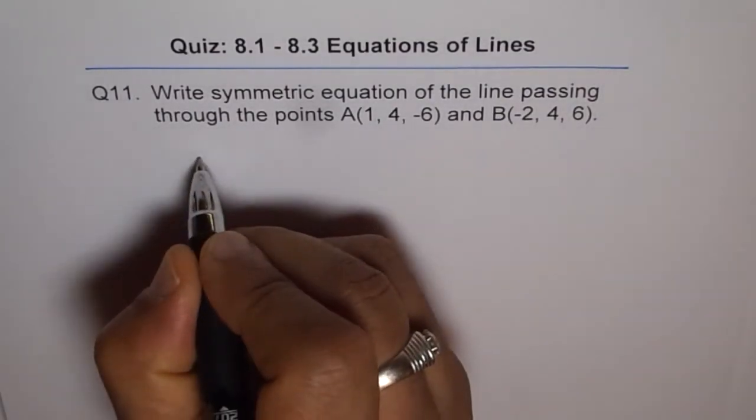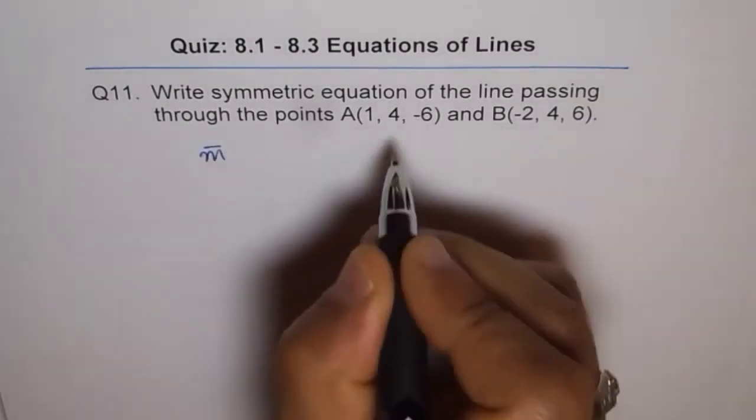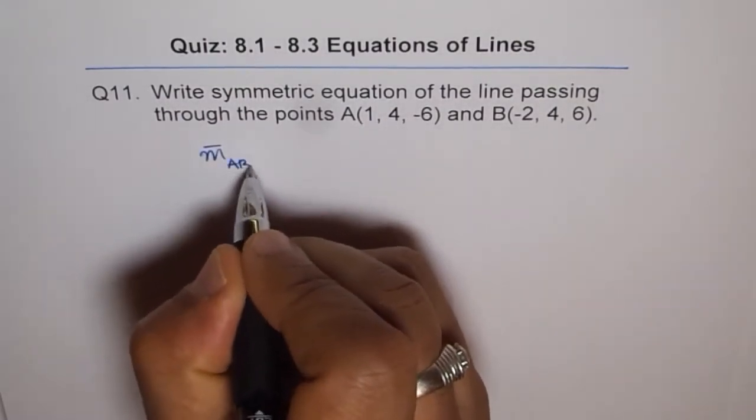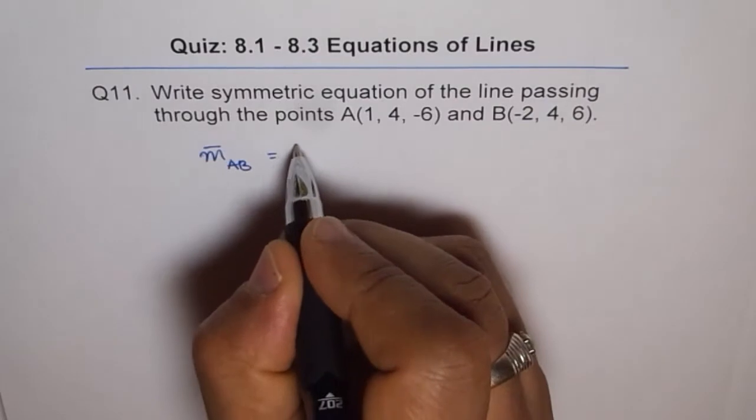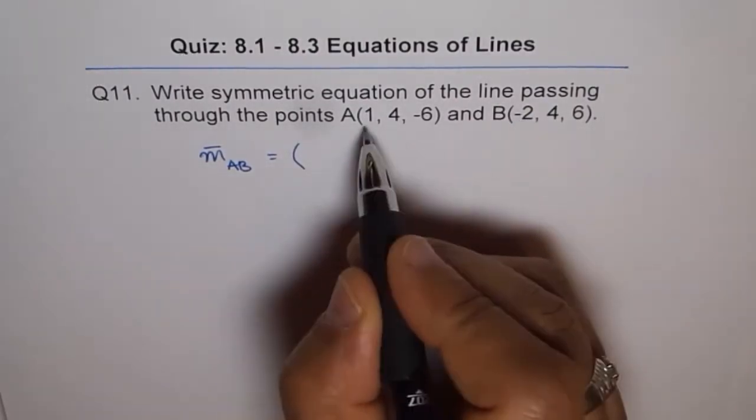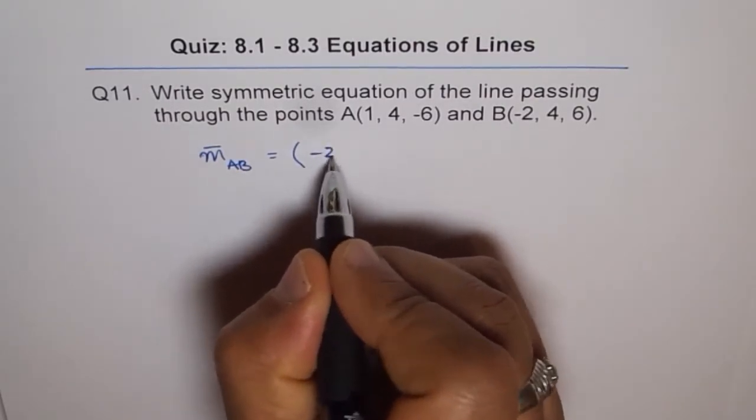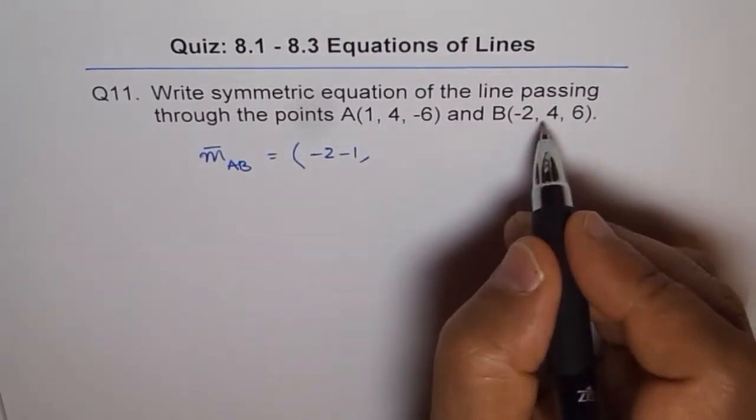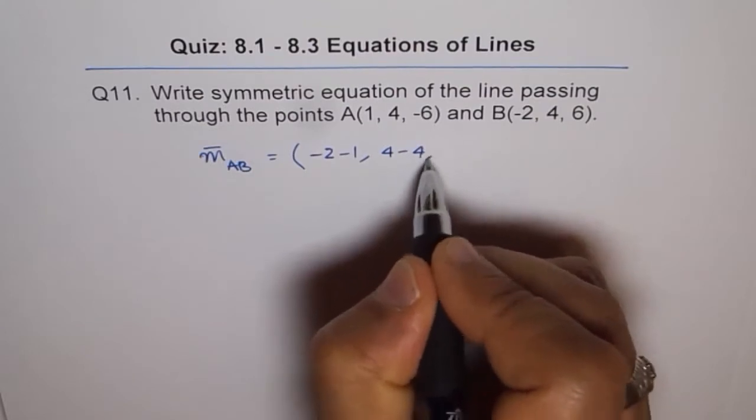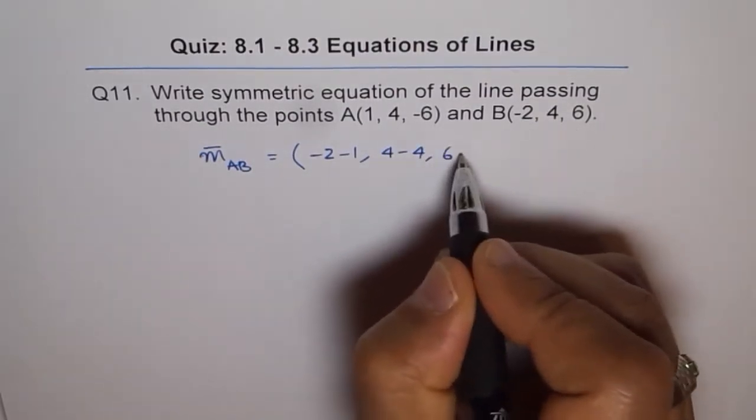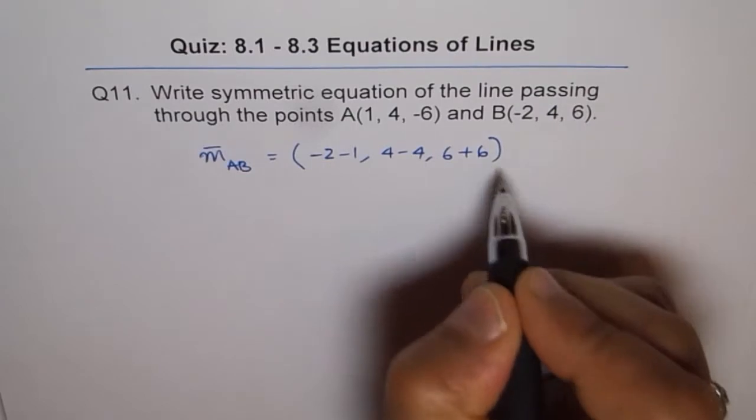Direction vector M from A to B can be written as B minus A, which is -2 minus 1. Let me write, -2 minus 1, and then 4 minus 4, and 6 minus -6, so it becomes 6 plus 6.